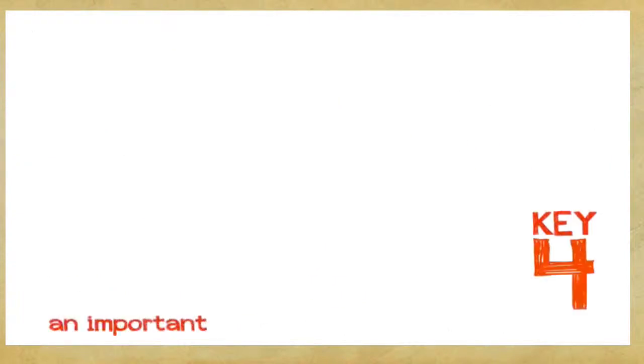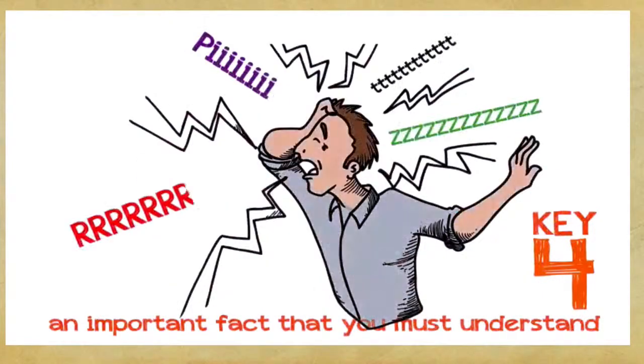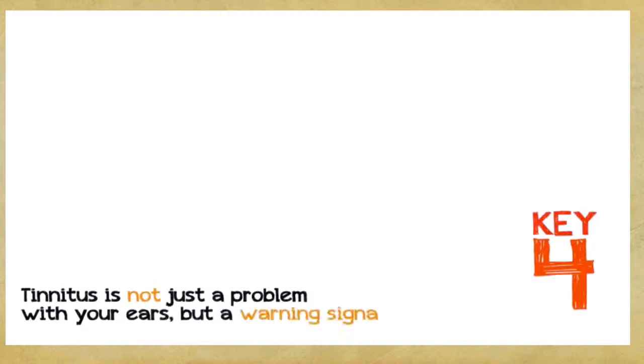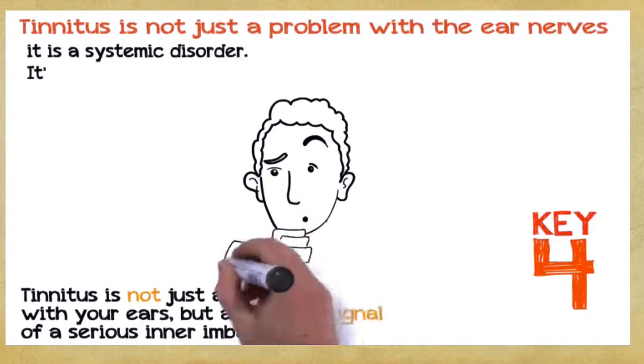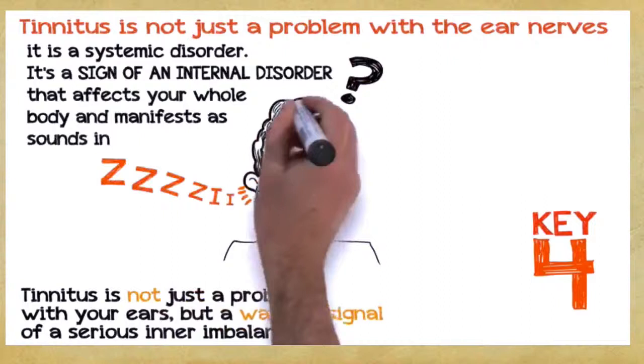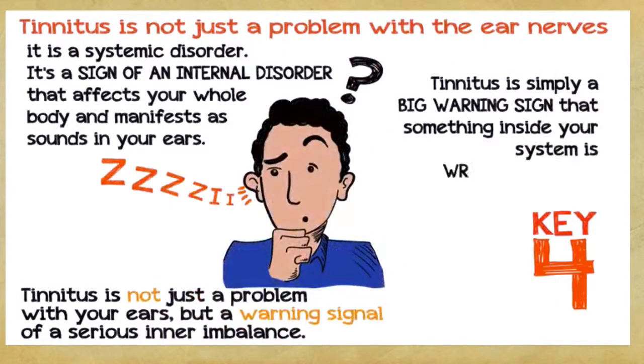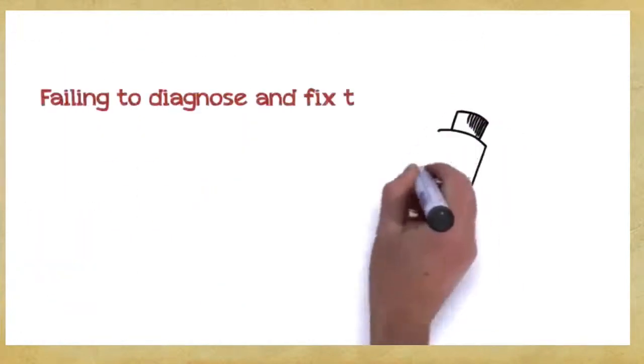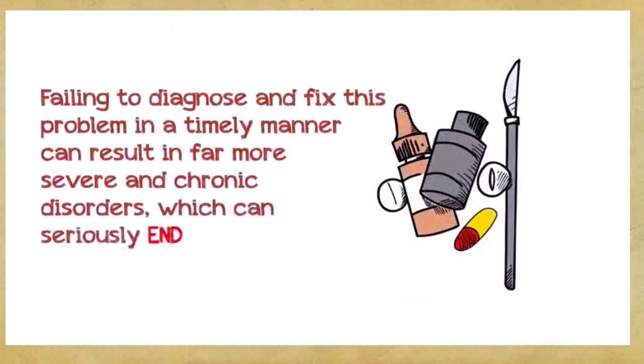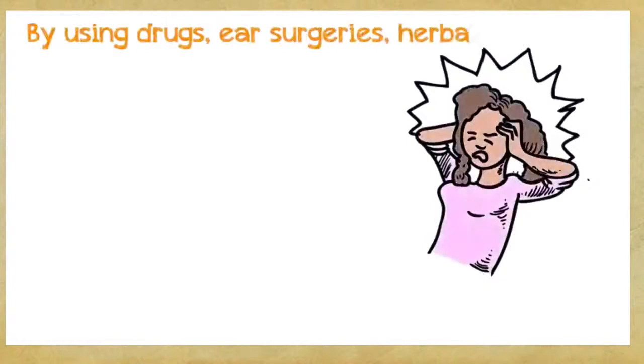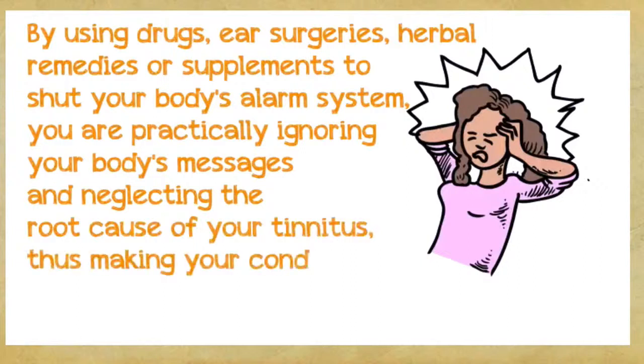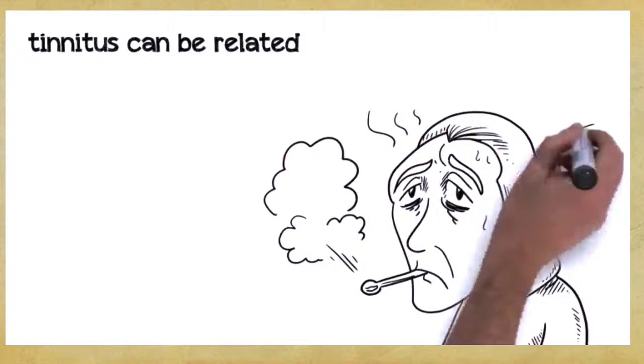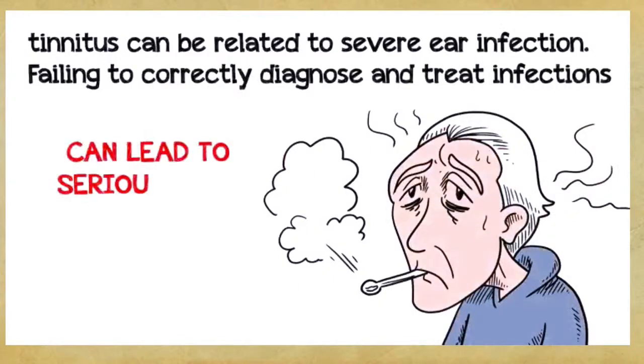Key number four: This is a very important fact that you absolutely must understand if you want to save hundreds or even thousands of dollars. Tinnitus is not just a problem with your ears, but a warning signal of a serious inner imbalance. In the vast majority of cases, tinnitus is not just a problem with the ear nerves, it's a systemic disorder. It's a sign of an internal disorder that affects your whole body and manifests as sounds in your ears. Tinnitus is simply a big warning sign that something inside your system is wrong and needs to be corrected. Failing to diagnose and fix this problem in a timely manner can result in a far more severe and chronic disorder. For example, tinnitus can be related to severe ear infection. Failing to correctly diagnose and treat infections can often lead to serious long-term health consequences.